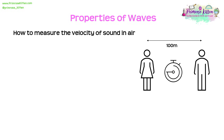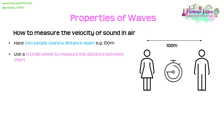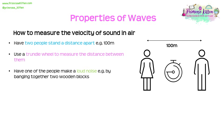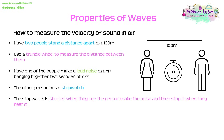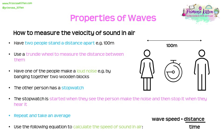To measure the velocity of sound in air: have two people stand 100 metres apart and use a trundle wheel to measure the distance. One person makes a loud noise — for example, banging wooden blocks or cymbals together. The other person starts a stopwatch when they see the noise being made and stops it when they hear it. Repeat and take a mean. Then use wave speed equals distance divided by mean time to calculate the speed of sound.